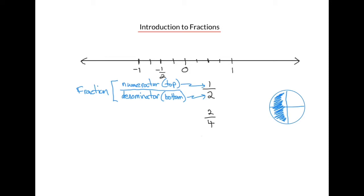So let's determine what the mark to the right of 0 represents as a fraction. It is one step out of four equal steps on the way from 0 to 1, or the fraction 1 quarter. What about the mark immediately to the left of 1? It is three steps out of four steps on the way from 0 to 1, or the fraction 3 quarters.